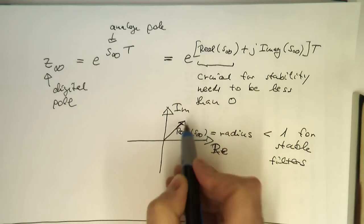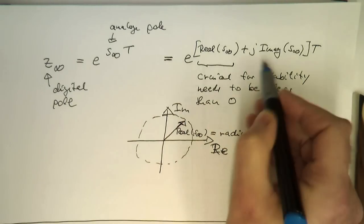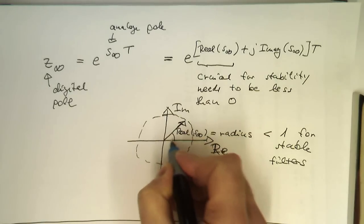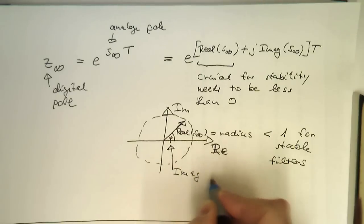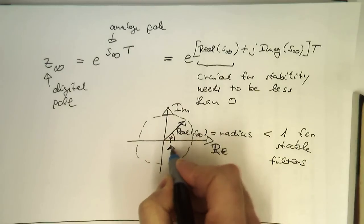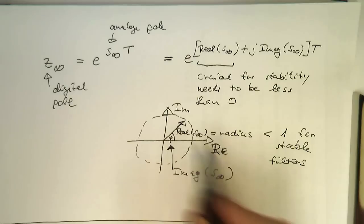And then the imaginary part is just defining essentially the phase, something like a phase angle here. This is here an angle and this is defined here by the imaginary part of s infinity. So the imaginary part doesn't do anything in terms of stability. It is just the real part of the s infinity.